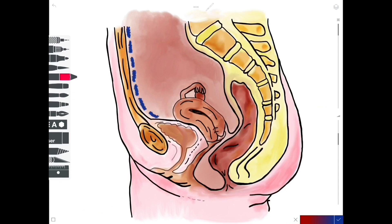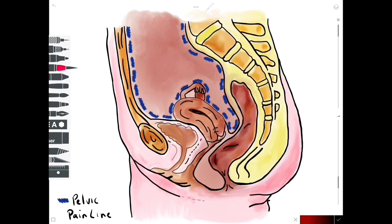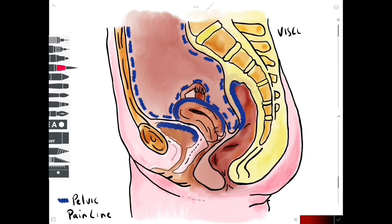Now we can move on and talk about the visceral afferent flow from the pelvic structures. We're going to draw on this blue dotted line, which represents the pelvic pain line. This is a term considered obsolete by some but still taught by many medical schools. It refers to the fact that some of these important pelvic viscera have a partial covering of peritoneum, which is important for how pain is felt at the level of the spinal cord. The structures with a partial peritoneal covering — shown in blue shading — include the roof of the bladder, the body and fundus of the uterus, and the anterior wall of the rectum.